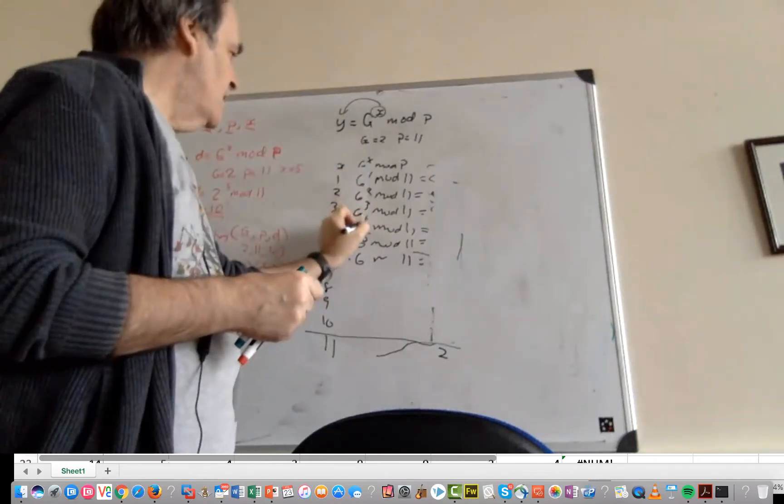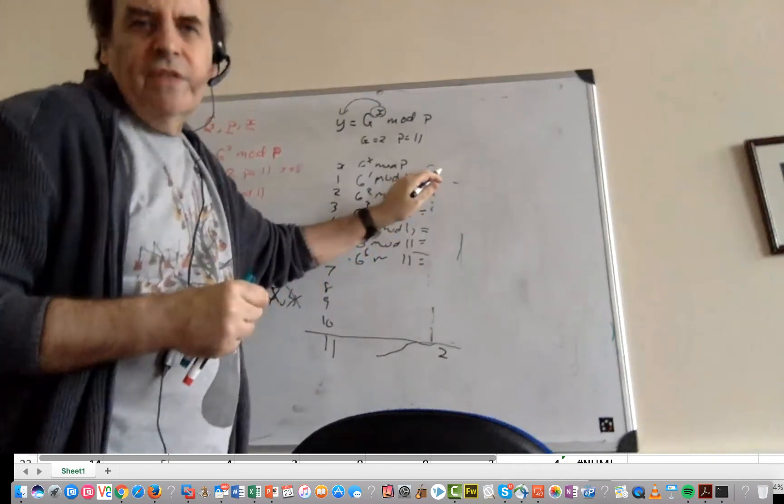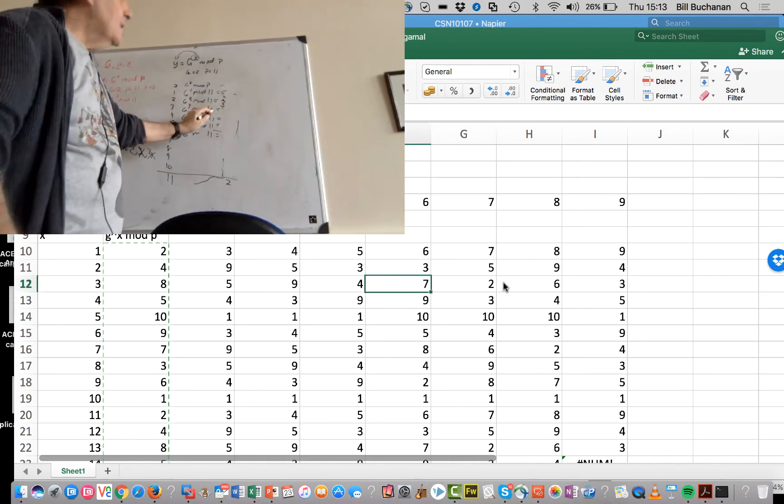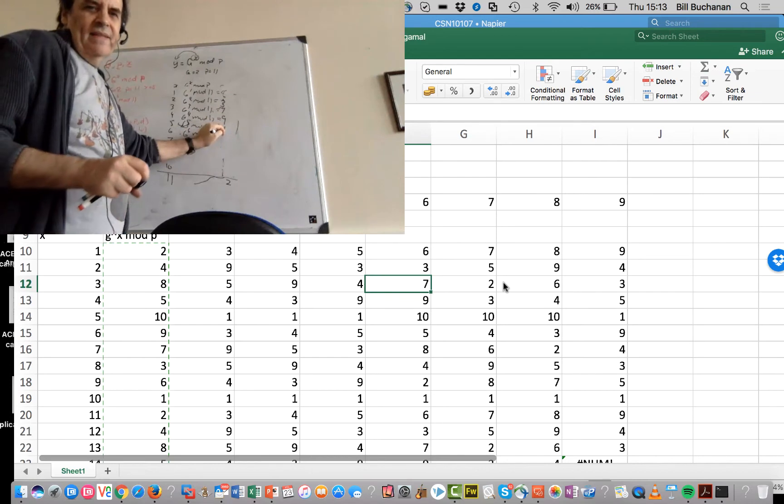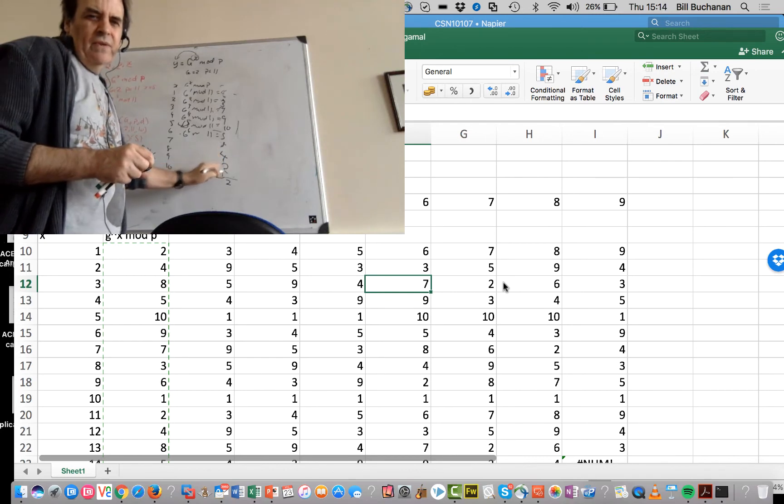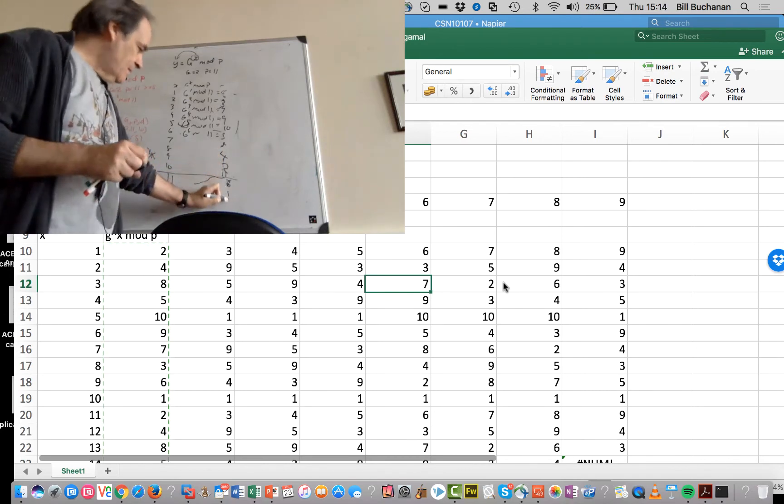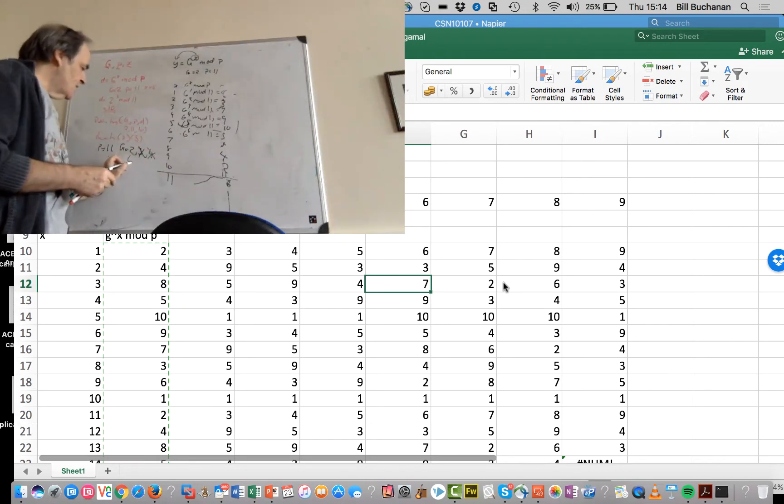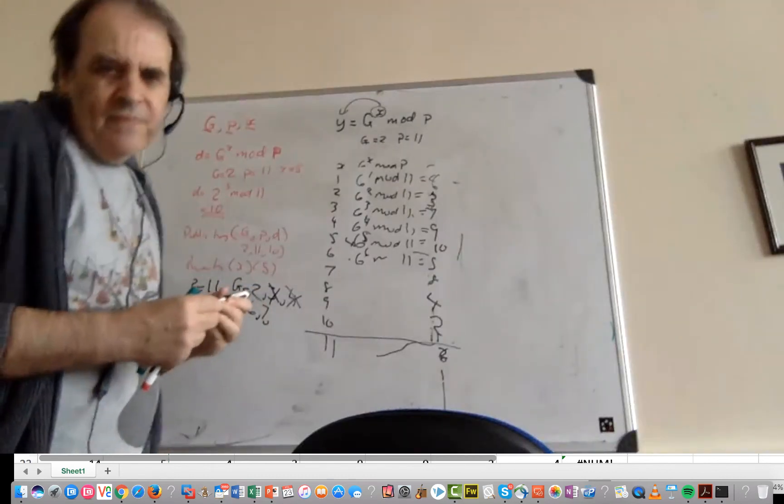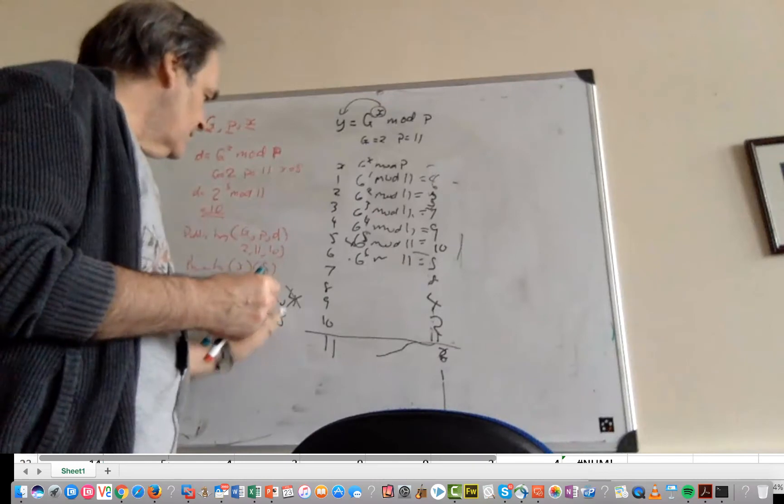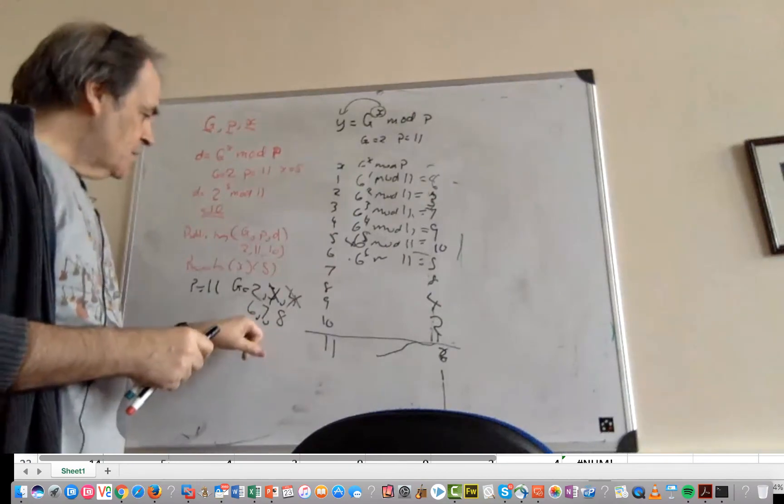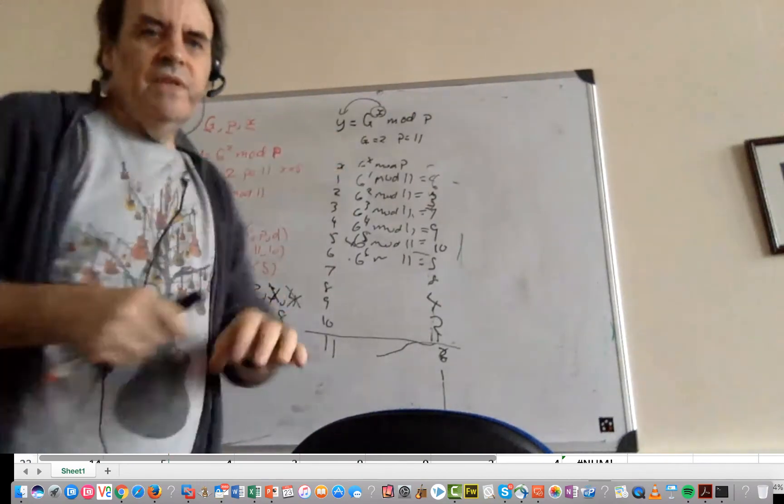If we try G equals 6, calculating 6 to the powers 1 through 10 mod 11 gives us 6, 3, 7, 9, 10, 5, 8, 4, 2, 1. So 6 works. 7 works, 8 works, and so on. In this way, we can select a value of G which will make our discrete logarithms work.